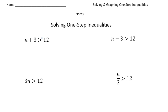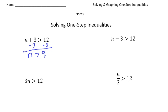Let's take a look at this first problem: n plus 3 is greater than 12. The way you solve this inequality is you have to do the opposite of adding 3 to both sides of the inequality, just like you would if you're solving an equation. The opposite of adding 3 is subtracting 3, so we're going to take away 3 from both sides. Now we get n is greater than 9 — and there's our solution.